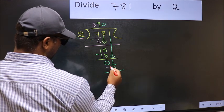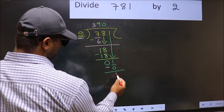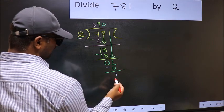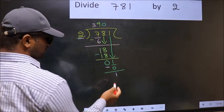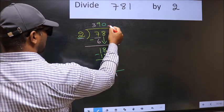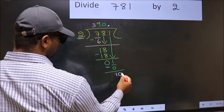Now you subtract. 1 minus 0, 1. Over here, no numbers to bring down. And also 1 is smaller than 2. So now you can put a dot and take 0.